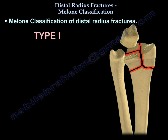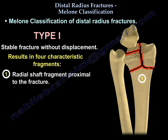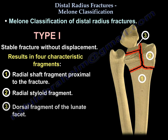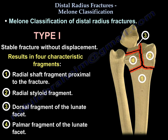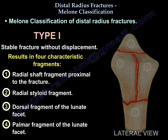Type one: stable fracture without displacement, which results in four fragments. Number one, the radial shaft fragment proximal to the fracture. Number two, the radial styloid fragment. Number three, the dorsal fragment of the lunate. Number four, the palmar fragment of the lunate. Here you can see the fracture fragments from different views.